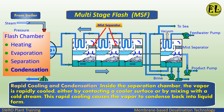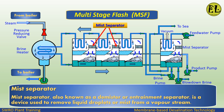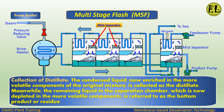A mist separator, also known as a demister or entrainment separator, is a device used to remove liquid droplets or mist from a vapor stream. The condensed liquid, now enriched in the more volatile components of the original mixture, is collected as the distillate.